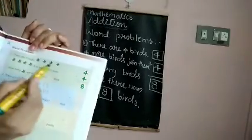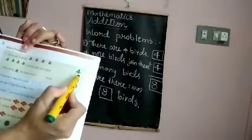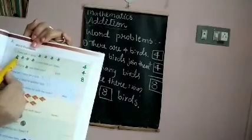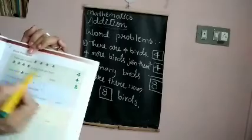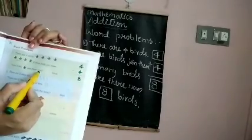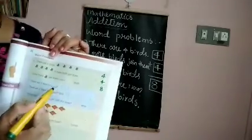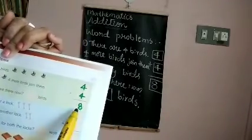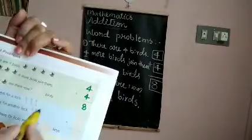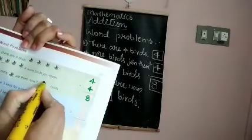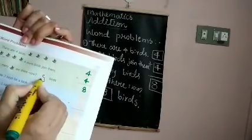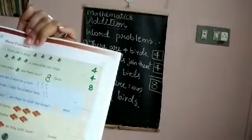So first there were four birds — write four in the box. Again four birds join them — write four in the box. To find the total number of birds, add four plus four, which is eight. Write eight in the answer box. They have asked how many birds, so write eight birds in that box as well.